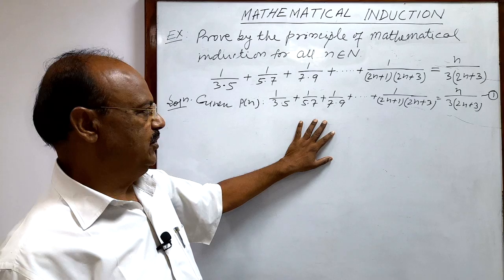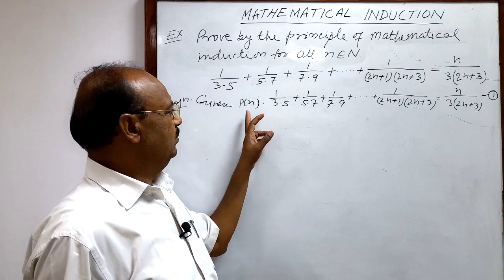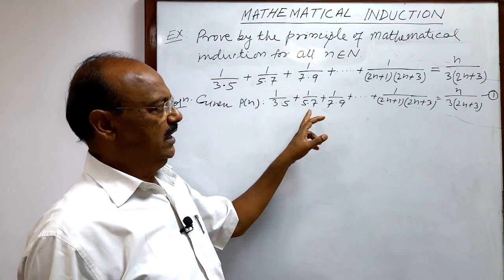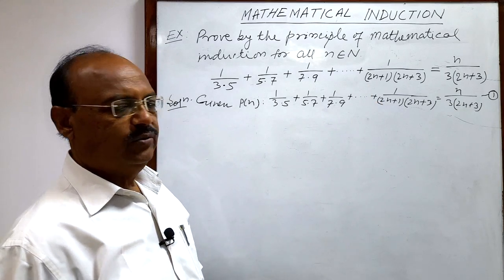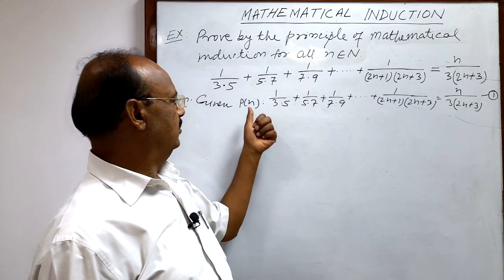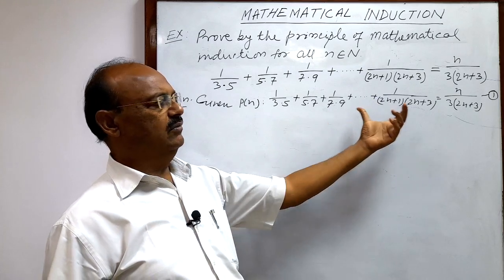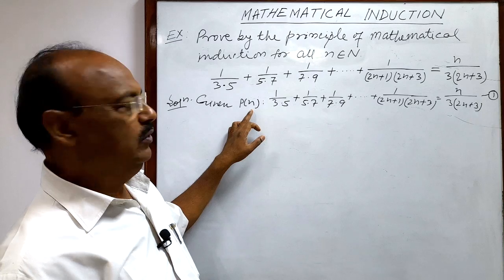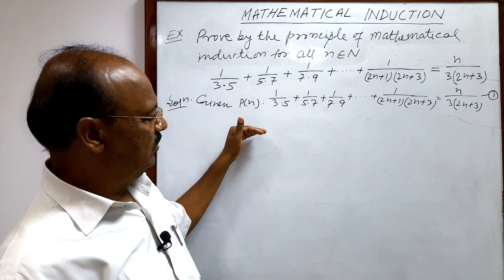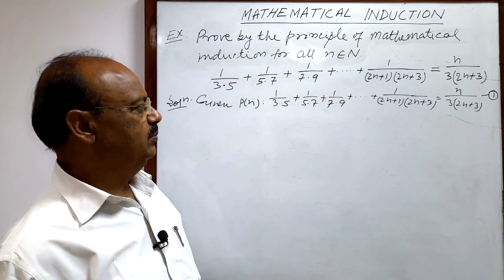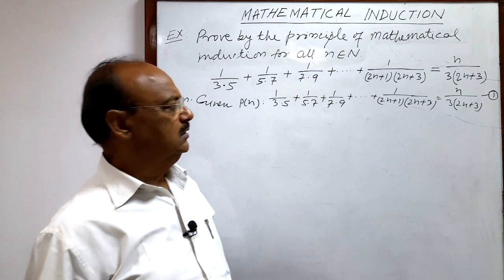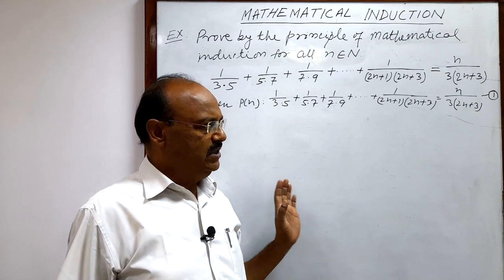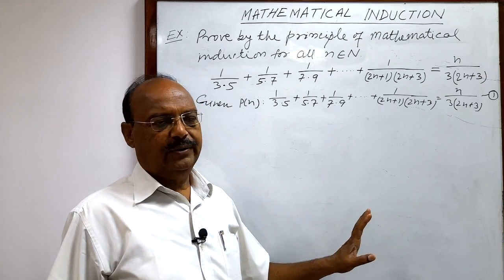We have to take only three steps to solve this question. First step: show that P(1) is true - put n=1 and show LHS equals RHS. Second step: assume that P(r) is true - put n=r and assume the given relation is true. Third step: show that P(r+1) is true - put n=r+1 and show LHS equals RHS. Finally, write the concluding statement that by the principle of mathematical induction P(n) is true for all n.